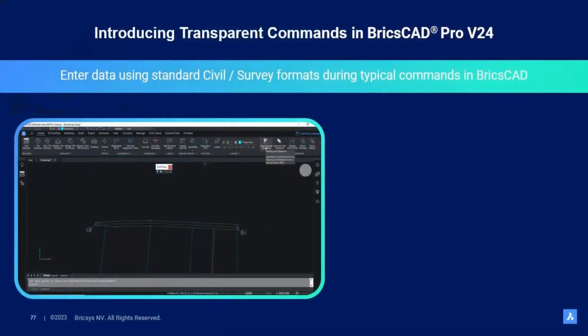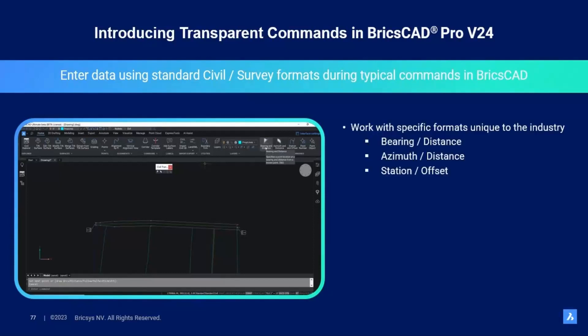Civil engineers and surveyors often have data in specific formats that are unique to their industry. The new transparent commands within BricsCAD v24 allow the user to enter data in these formats directly into a typical BricsCAD command — things like drawing by bearing and distance, or azimuth and distance, or station and offset, even by point number and point object.